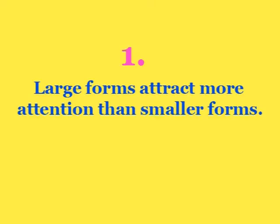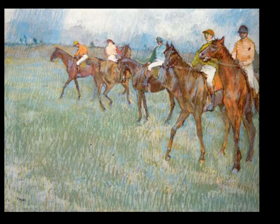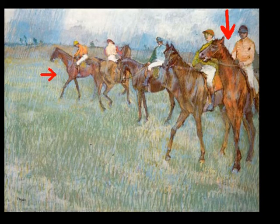Unlike the strict geometry of symmetrical balance, there is no absolute formula for establishing asymmetrical balance. It is often just up to the sensibility of the artist to know when an asymmetrical work is balanced. There are a number of rules that help dictate how to balance a composition, which I will illustrate from this drawing of jockeys before a race created by the French Impressionist Edgar Degas. First, large forms attract more attention than smaller forms. In the example of Degas's jockeys, the large horse on the right commands more attention than the smaller ones on the left.